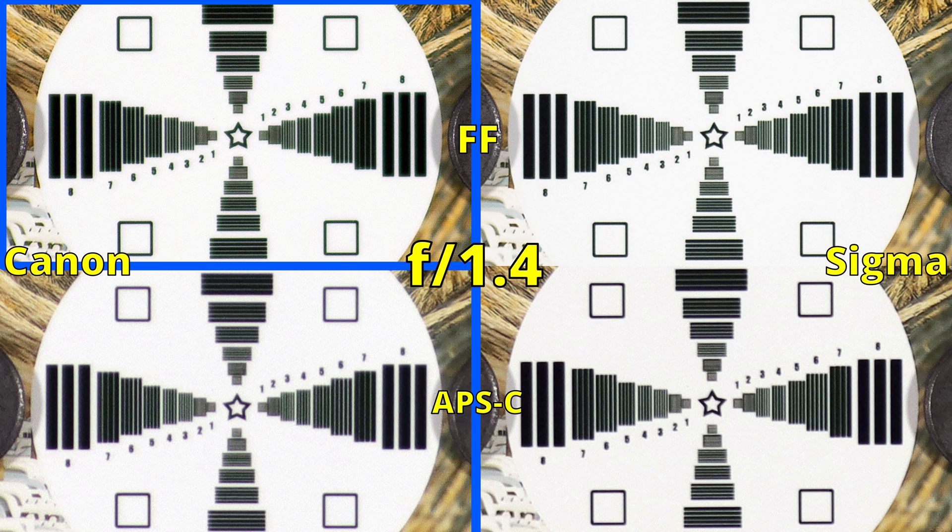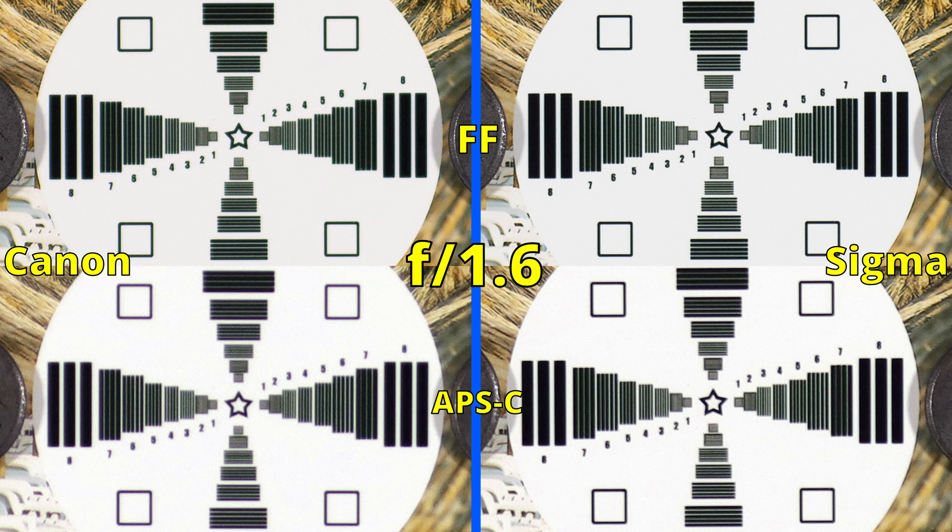The Canon lens is doing okay on full frame but not on APS-C. Let's now close the aperture to f1.6 where both lenses improved. On full frame, there is no more ghosting on the Canon lens and the Sigma lens looks great. On APS-C in the left side, we see sharpness but a lot of ghosting. On the right side, it looks better.